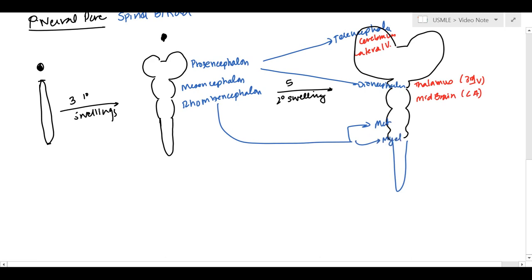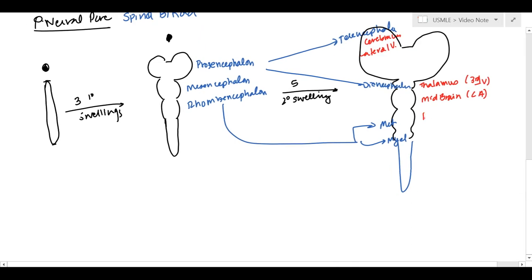So, you're going to get the metencephalon and the myelencephalon. Now, the metencephalon will become the pons and cerebellum, and the myelencephalon will eventually become the medulla oblongata, and the fourth ventricle extends through the both of those.